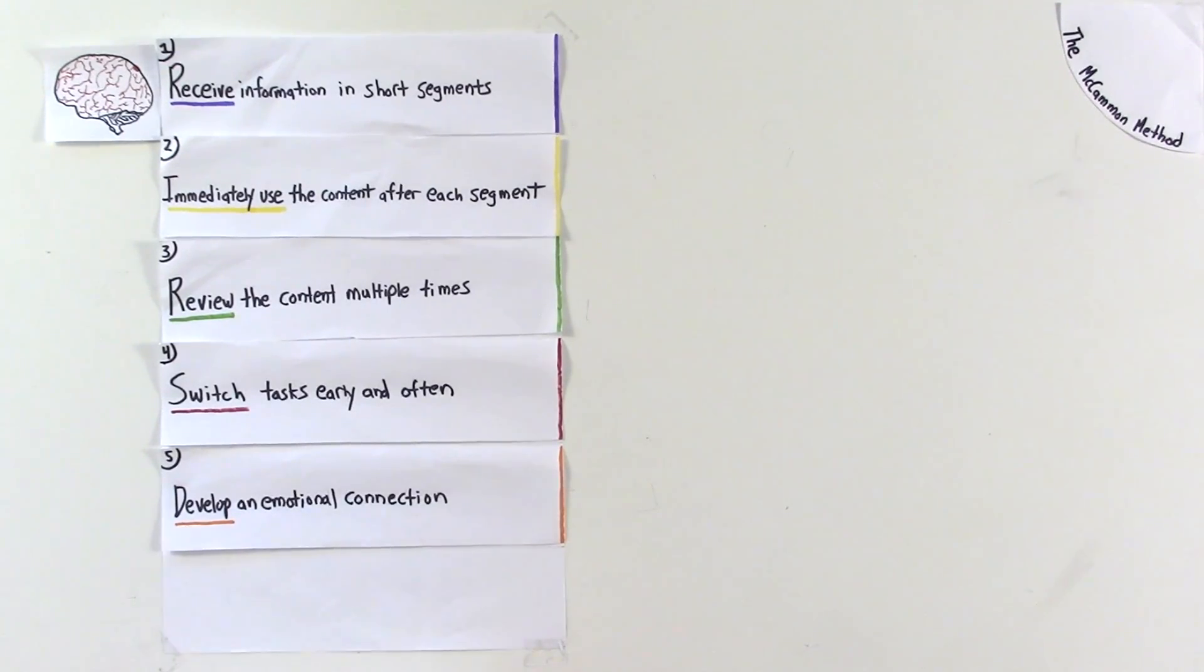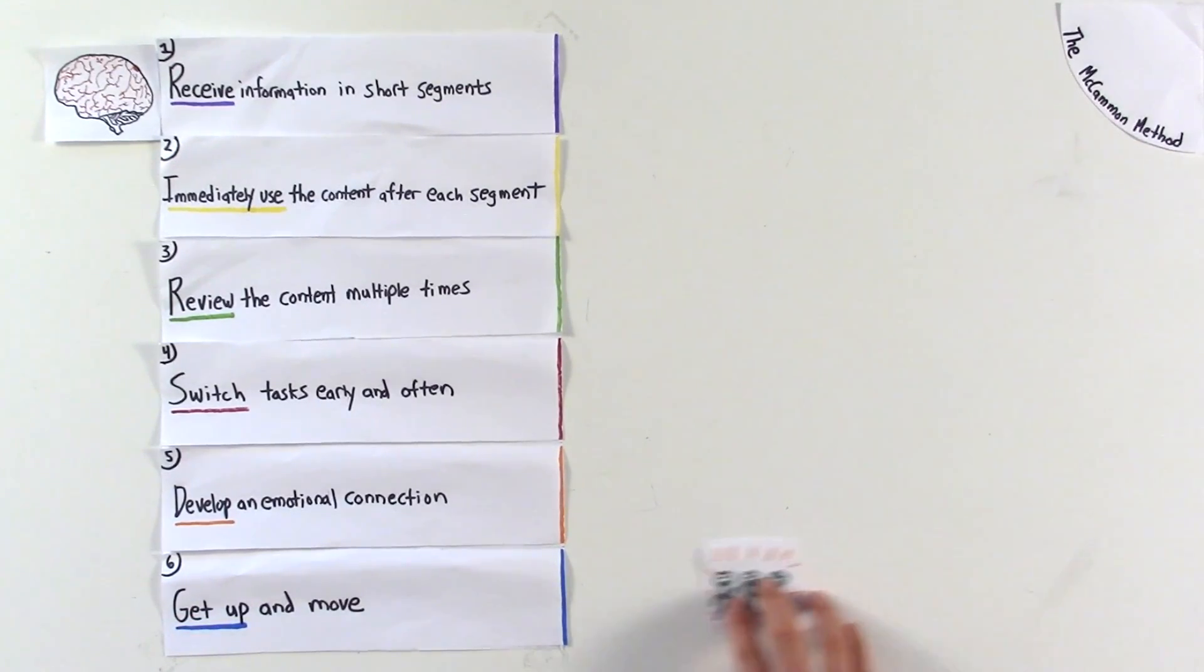Finally, students should get up and move as much as possible. Standing and moving around any classroom promotes blood flow to the brain. Movement can increase memory, creativity, attention, and achievement. Here is a best practice.